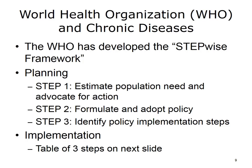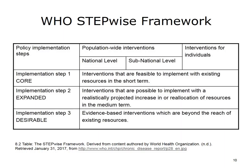The World Health Organization, or WHO, has developed the Stepwise Framework to enable surveillance of chronic diseases. The framework has two stages—planning and implementation. The planning stage includes three steps. Step 1 involves estimating the population need and advocating for action. Step 2 is formulating and adopting policy. Step 3 is the modification of policy.